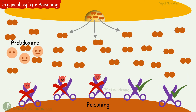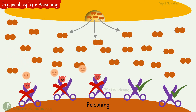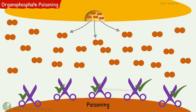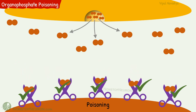The treatment for this is pralidoxime. In case of organophosphate poisoning, the anionic site is free. Pralidoxime first binds with this anionic site, which allows it to bind with the organophosphate. Then the entire complex dissociates, leaving behind a free enzyme. Because of this reactivation, we again have more active enzymes. These enzymes now degrade the excess acetylcholine and relieve the symptoms of poisoning. In a nutshell, pralidoxime is useful in organophosphate poisoning.